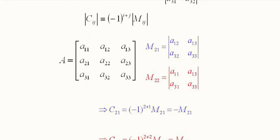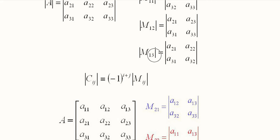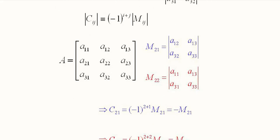We can find a number of minors. As a rule, the number of minors equals the number of members of the matrix. For a 3x3 matrix we can find minors with respect to a11, a33, a21, a31, a13, a22, and so on. We typically work with three of them but can find minors for all members.